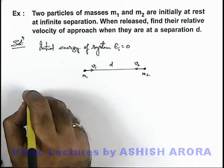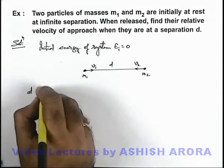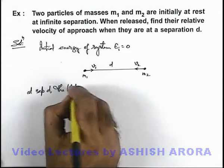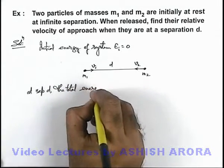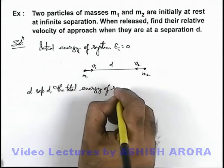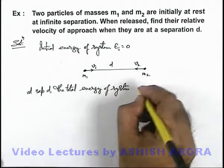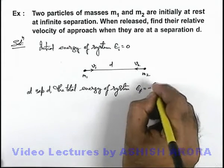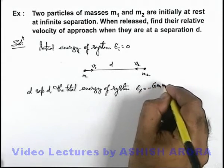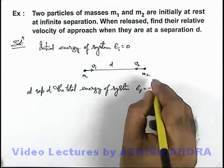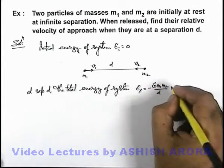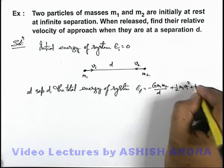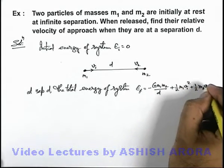Then we can simply state at separation d, the total energy of system is E final, which can be written as minus G m1 m2 by d, that's the gravitational interaction energy of these two particles, plus their kinetic energy: half m1 v1 square plus half m2 v2 square.